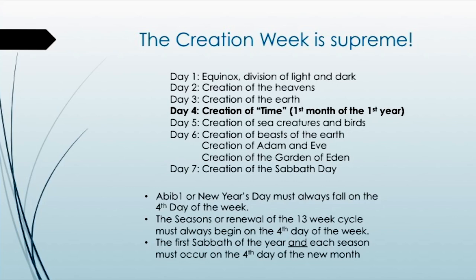It wasn't until the heavens and the earth were both created on day 3 that it was good. On day 4, we see the creation of time. This is the first month of the first year. How is time calculated? Through the use of the sun, the moon, and the stars. Until we had the sun, the moon, and the stars placed in the heavens on the fourth day, time just didn't exist — not as we know it today.